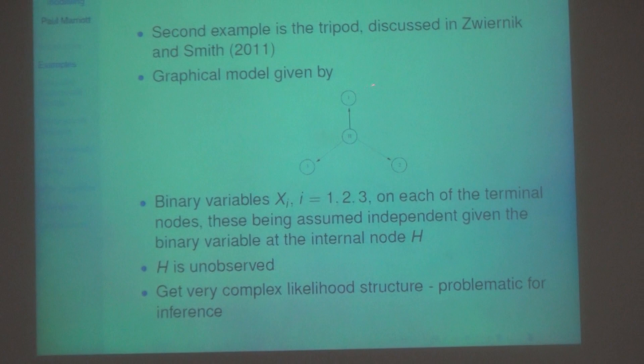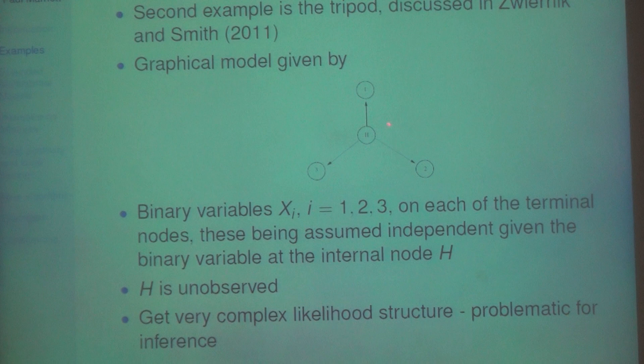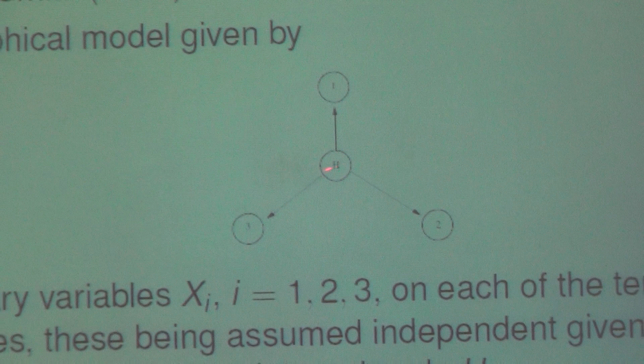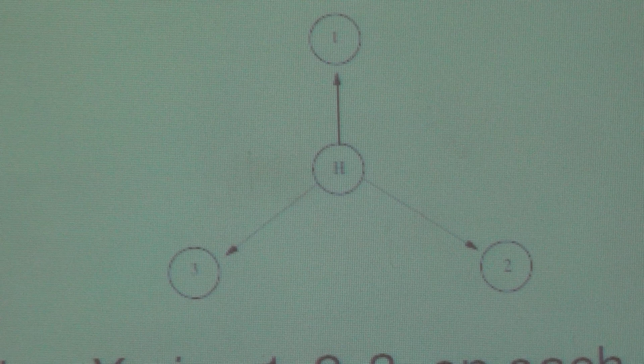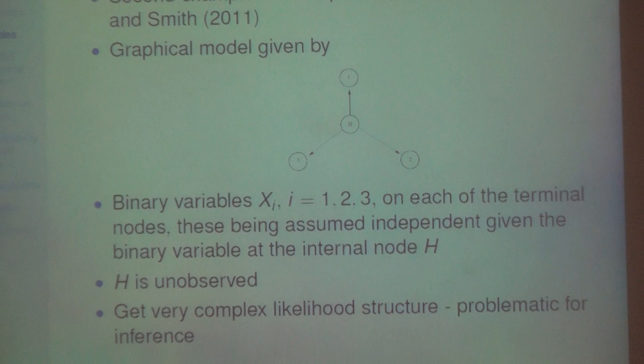The second example, completely different, comes from graphical models — a very simple-looking model with very complicated likelihood behavior. This is the tripod model, from Sven Ekins and Jim Smith. Here's a simple graphical model where each node has a binary random variable — yes/no, on/off. There are four nodes, but one of them is hidden. If I knew the hidden node, each of the three observed nodes would be independent of each other. But I don't see the hidden node, so it still looks like a very simple model; however, the likelihood structure for this is incredibly complex: multiple local maxima, disconnected level sets. MCMC has a problem moving around this space, gradient-flow things have a problem, EM is a local method. Astonishingly simple model, very difficult inference.